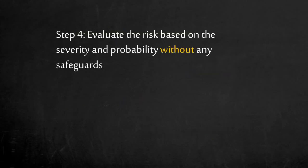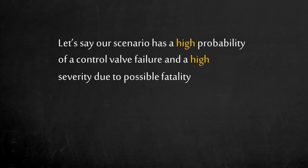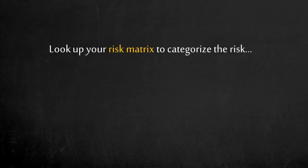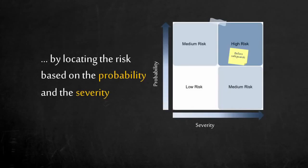Step 4: Once a consensus is reached, evaluate the risk based on severity and probability without any safeguards. Let's say our scenario has a high probability of control valve failure and high severity due to possible fatality. The definition of high probability and high consequences is defined in your corporate risk matrix. In this example, high probability and high severity on the risk matrix is considered high risk and not acceptable.